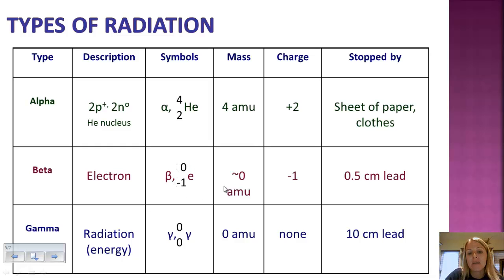The mass number, fairly close to 0. The charge of an electron is negative, so negative 1. This one can penetrate through more stuff, so it can only be blocked with something as 0.5 centimeters of lead.